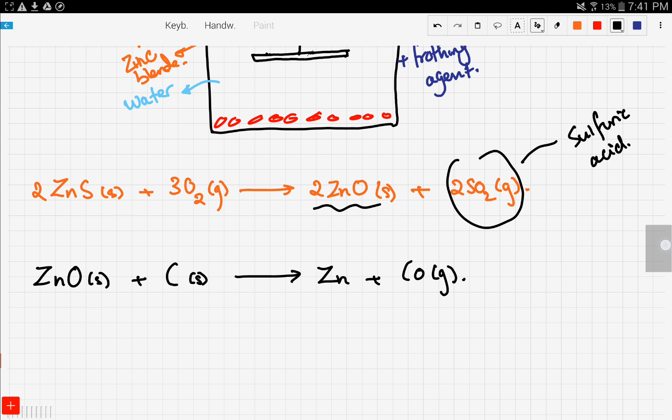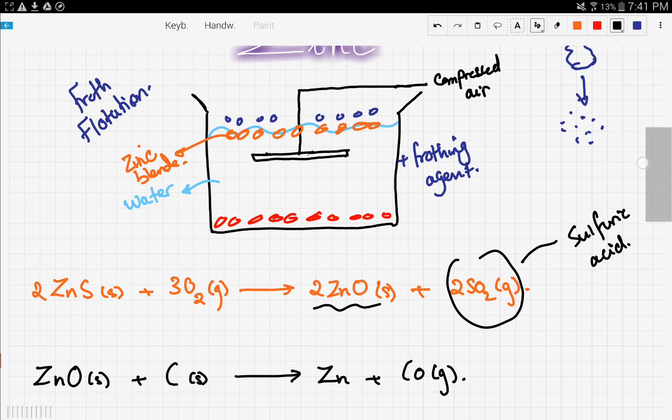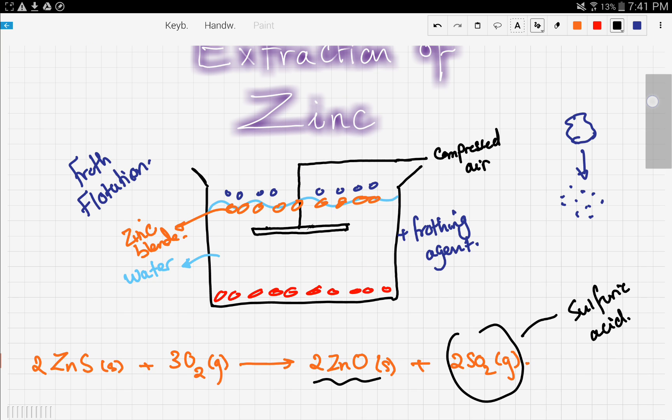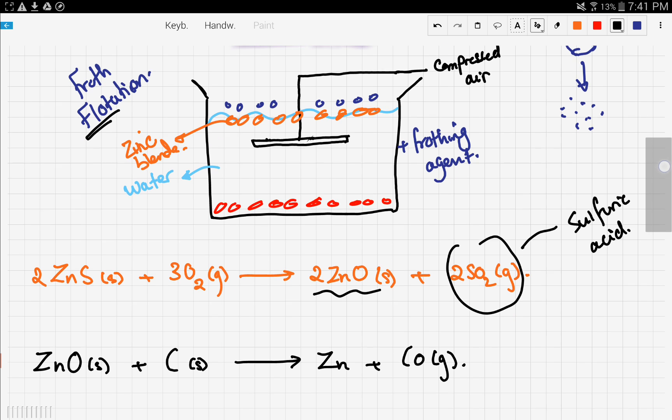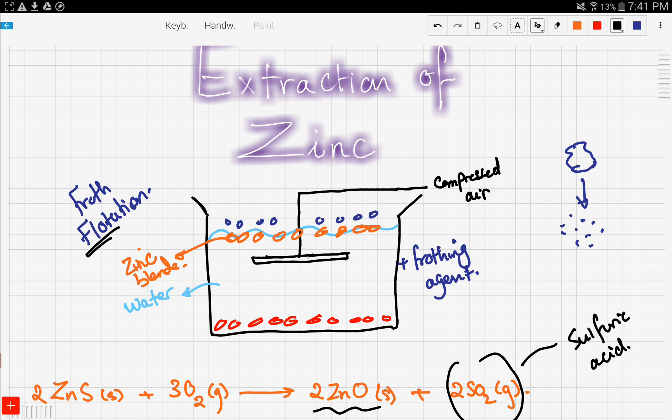So let's go over this one more time. The initial process, the froth flotation, you guys are not responsible for, but the last two equations you guys are responsible for. So what happens is we take the not purified ore and we crush it into tiny, tiny pieces. And then we spray those pieces onto a tank of water with a frothing agent.